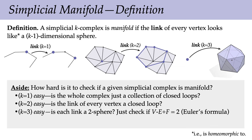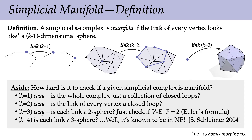So far this sounds easy — give me a simplicial complex and I'll tell you if it's a manifold. But what about a simplicial four-complex? Now we have to check: is the link of each vertex a simplicial three-sphere? This turns out to be a very tricky question. What people know so far is that it's in NP — can you recognize a three-sphere in polynomial time? Unknown. All of a sudden this is a much more complicated question.